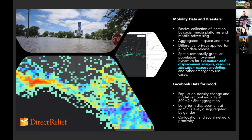I was able to work with Facebook to acquire data about aggregated user locations in fairly fine-grained areas to look at changes in population density over the course of the fire. You're looking at that heat map, which is a representation of one of the mornings of the Thomas Fire, where there had been movement away from areas in Carpinteria and Ventura and elevated populations in Santa Barbara — which shifted as the fire changed.